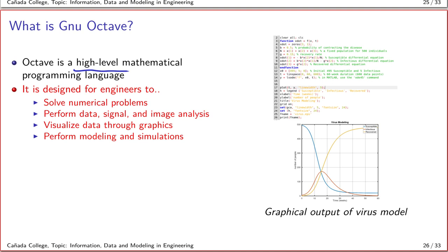GNU Octave is designed for engineers to solve numerical problems, perform data, signal, and image analysis, visualize data through graphics, perform modeling and simulations. As an example here, here's an output of a typical modeling code. The code is shown here and it's basically describing how a virus can grow in a certain population given some underlying conditions for its growth rate. The code sets up your model and once you run it, it outputs this graphical output.